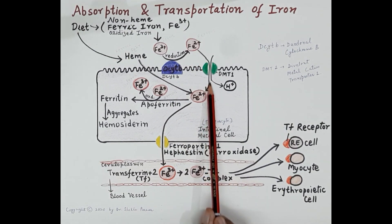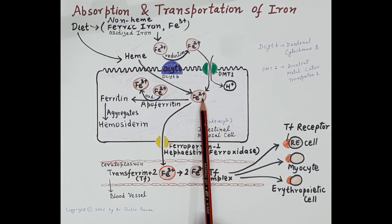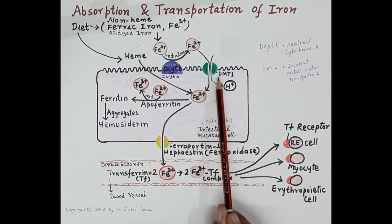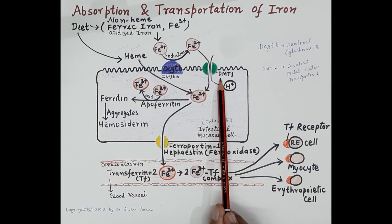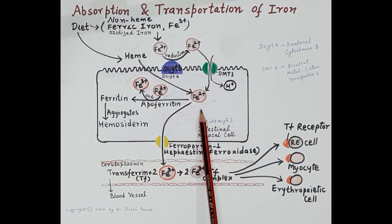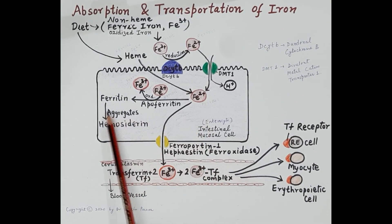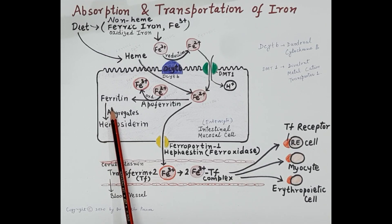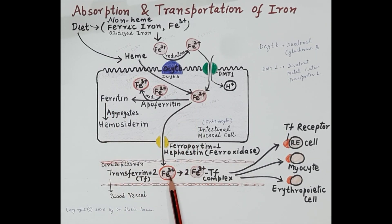This ferrous iron form is then transported inside the intestinal mucosal cells by a transporter called the divalent metal cation transporter 1 (DMT1). Once transported inside the cell, this ferrous iron — Fe2+ — is either stored as ferritin in the intestinal mucosa or transported into the blood.